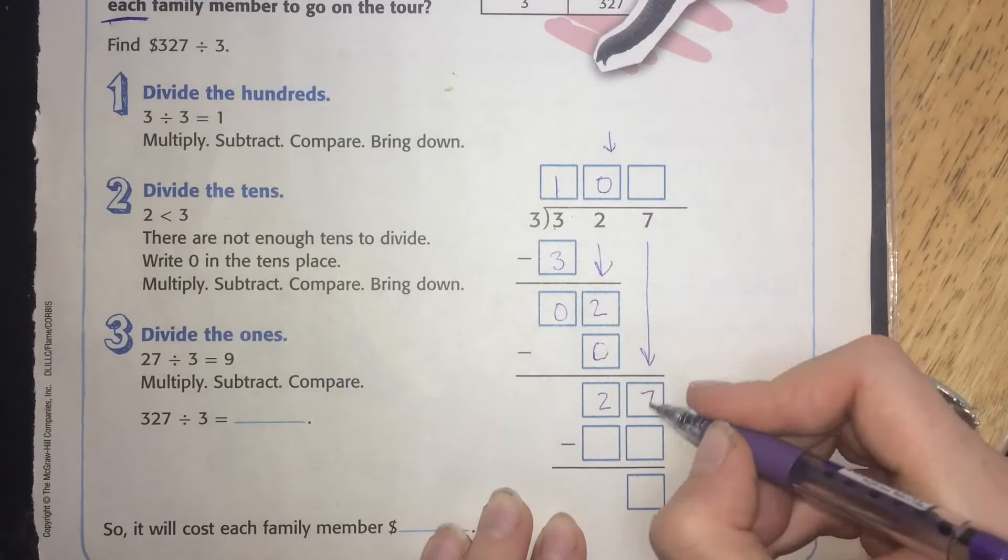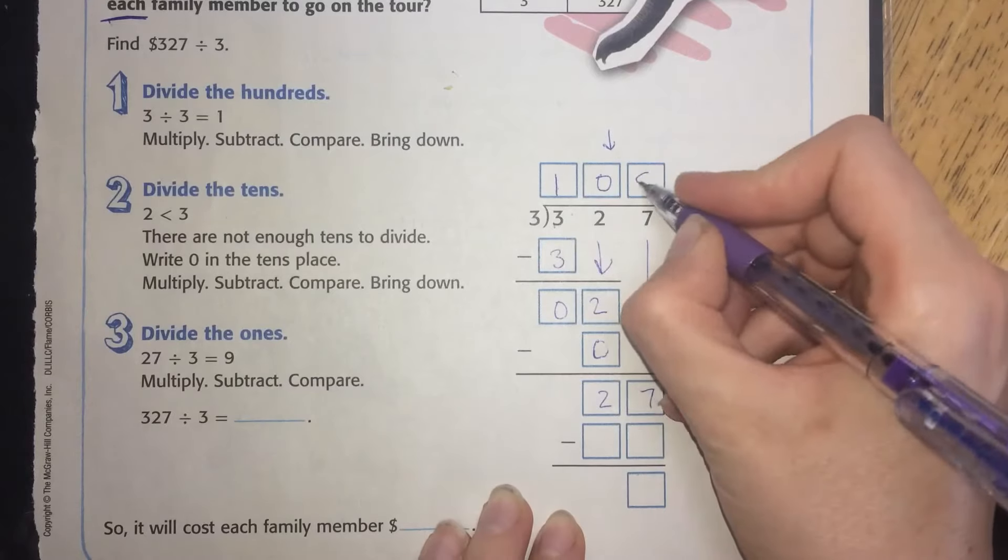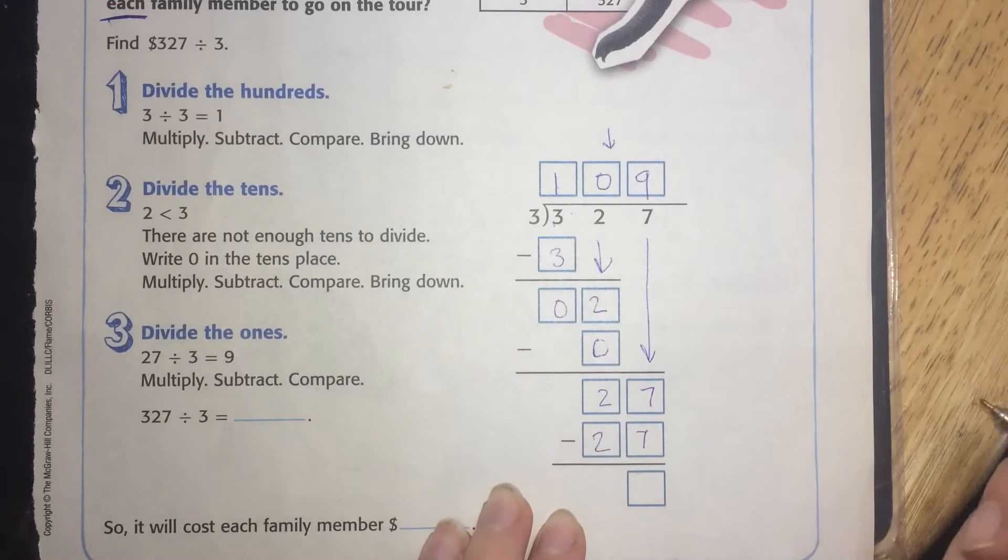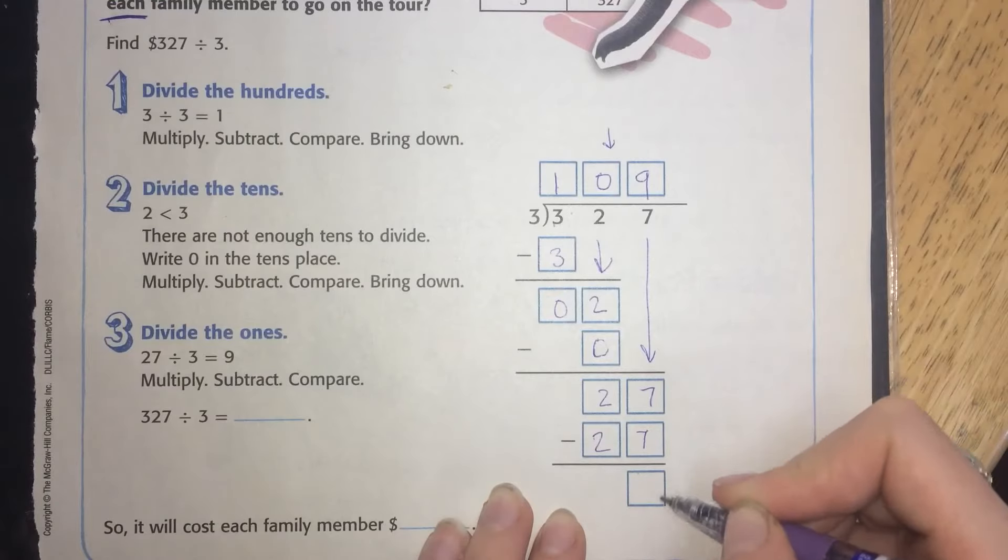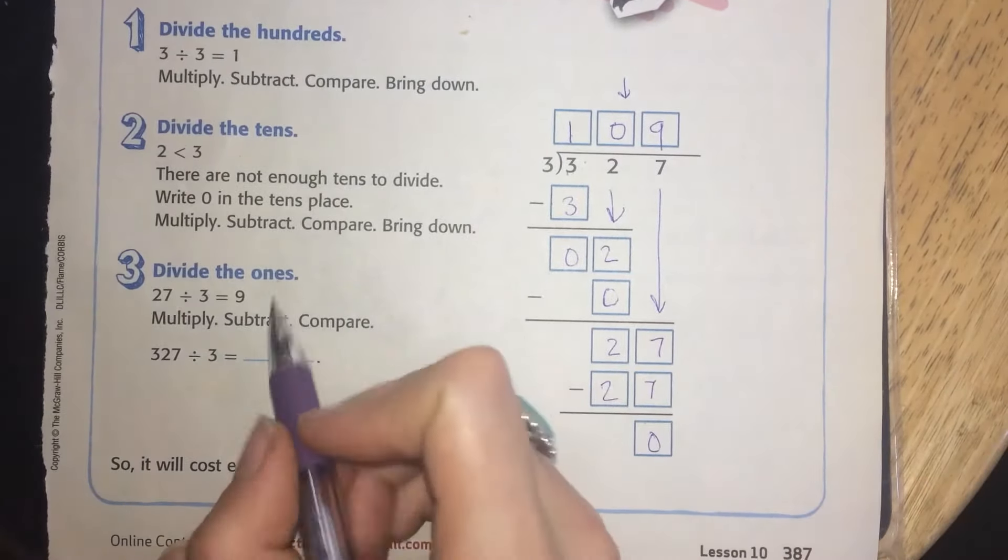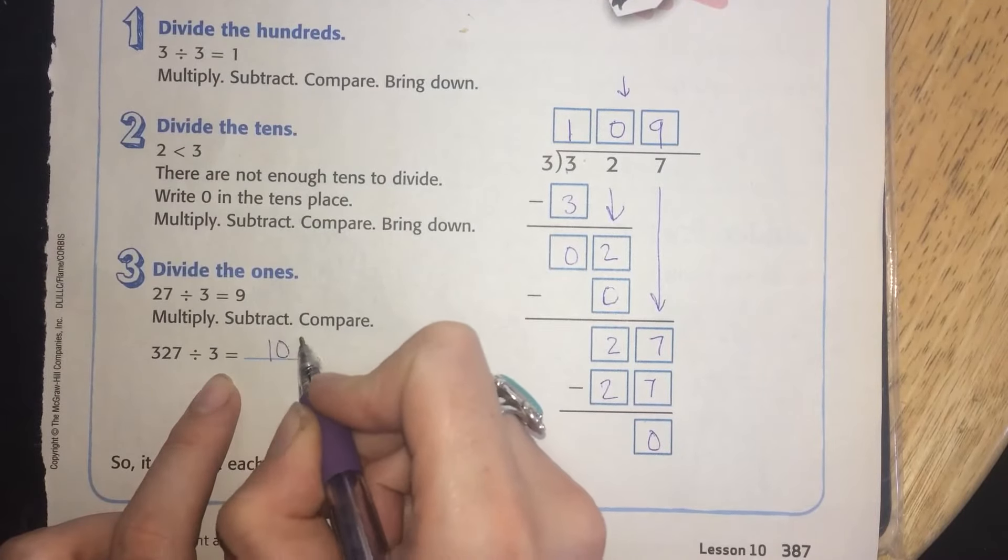Bring down the 7. 27 divided by 3 is 9. 9 times 3 is 27. And 27 minus 27 is 0. So 327 divided by 3 is 109.